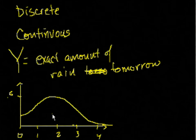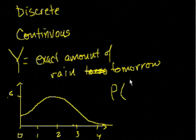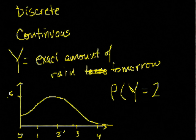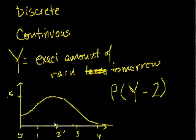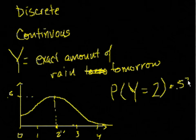So the way to think about it: if you were to look at this and I asked you, what is the probability that Y — our random variable — is exactly equal to 2 inches? What's the probability of that happening? Based on how we thought about probability distribution functions for discrete random variables, you'd say, well, 2 inches — it looks like it's about 0.5. Is it a 0.5 chance? And I would say no, it is not a 0.5 chance.